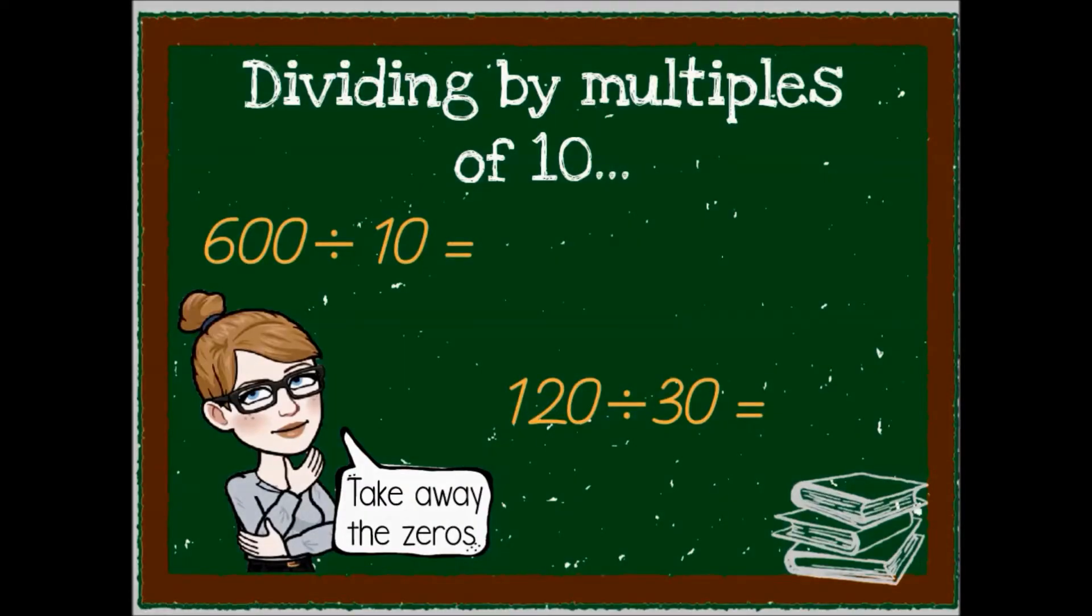Let's just do a quick mental checkup to see if you know the easy way of dividing with multiples of 10. So before, when we multiplied, we added zeros. But when we divide, we take away zeros.